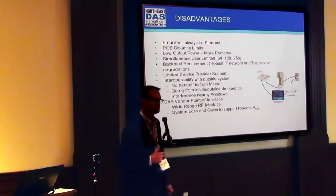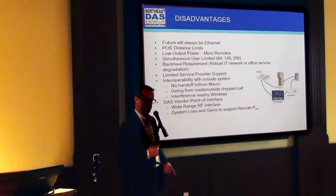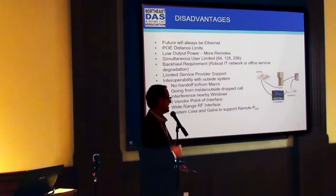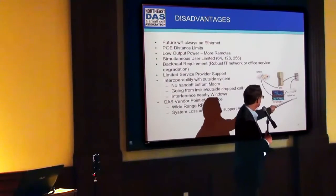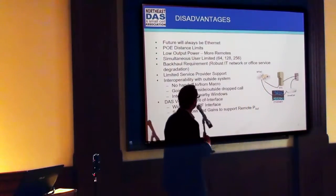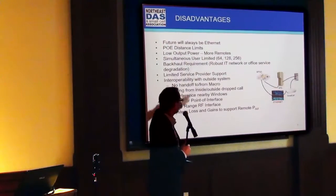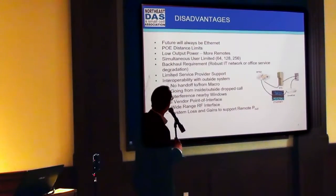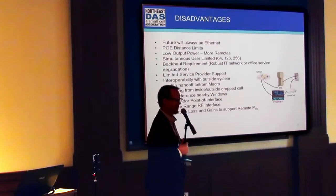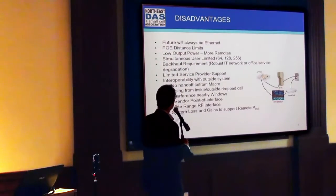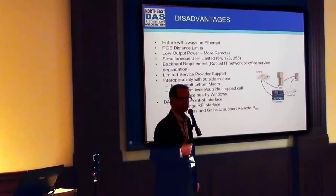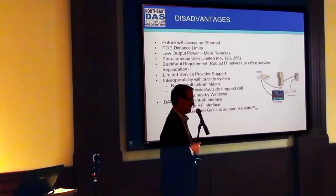Some of the disadvantages — and this is more about the small cell itself. In the case of Spider Cloud, it's always going to be Ethernet. So if you do Spider Cloud in a small venue or small site, you're going to run Ethernet out to your small cell. You can also run your small cell into an active DAS, which is where I'm going with this. Power over Ethernet is going to have distance limitations like 300 feet or so. You've got lower power output on some of these small cells. Simultaneous users may be limited — 64, 128, 256. Your backhaul requirement, if you go with eFemto or Spider Cloud, you've got to reuse the IT infrastructure, and if your IT is not very robust — that's a problem.